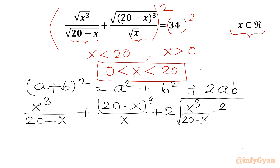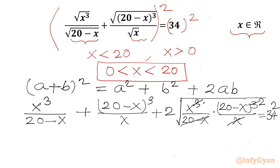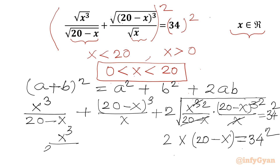For the 2ab cross term, I cancel (20 minus x) — with the cube, power 2 is left — and similarly cancel x. This gives 2 times the square root of x squared times (20 minus x) squared, which simplifies to 2x(20 minus x). The RHS is 34 squared.